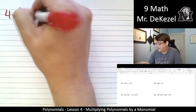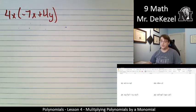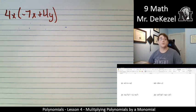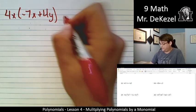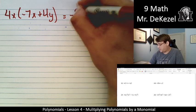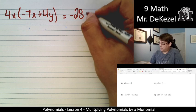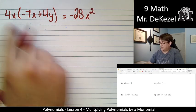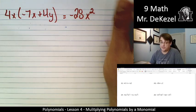We have 4x times negative 7x plus 4y in the brackets. We've got two different variables, and that's not going to deter us. We take the first term and multiply it by the first term. That is 4 times minus 7, that's minus 28. And then x times x, we add the exponents, that's 1 plus 1, that's x².